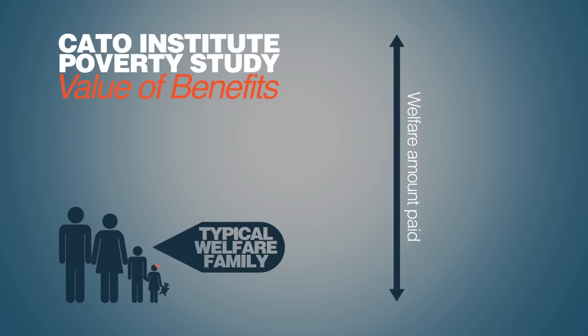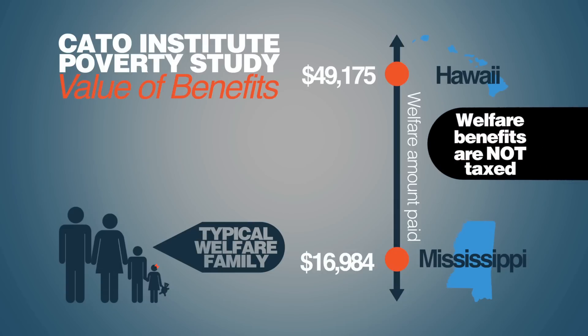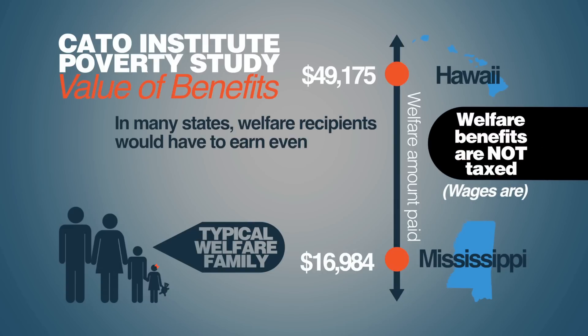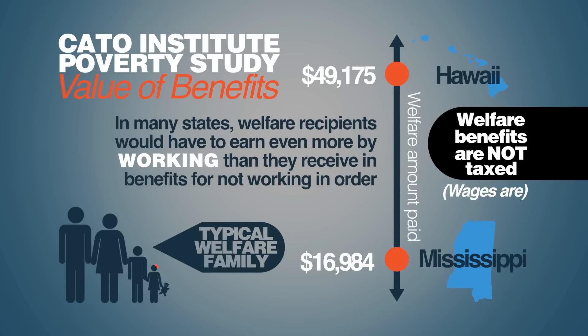Our study found that the value of these benefits varied from a low of $16,984 in Mississippi to an astonishing high of $49,175 in Hawaii. And keep this in mind: Welfare benefits are not taxed, while wages are. That means that in many states, welfare recipients would have to earn even more by working than they receive in benefits for not working in order to come out even.